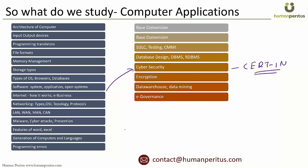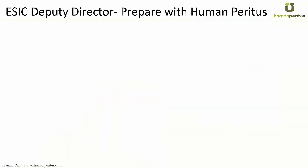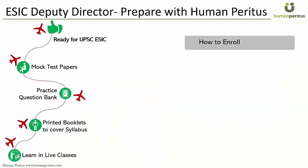Go through data warehousing, data mining, data marts, and e-governance — you will also study this as part of your General Studies. E-governance is always very relevant, so go through different types: G2C, C2G, G2B, C2C, and these different models. Also study shortcut keys, which should really be part of every standard book. And cover new technologies: neural networks, cloud computing, IoT, AI, fuzzy logic, blockchain, and Bitcoin — which is part of blockchain.